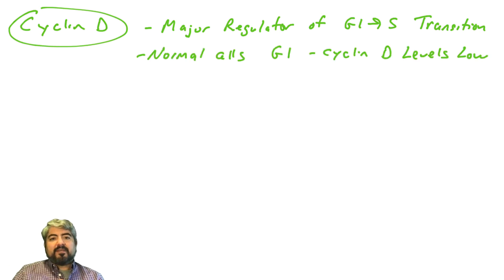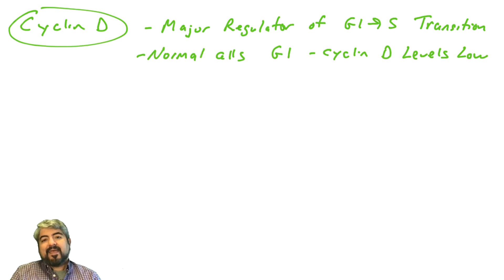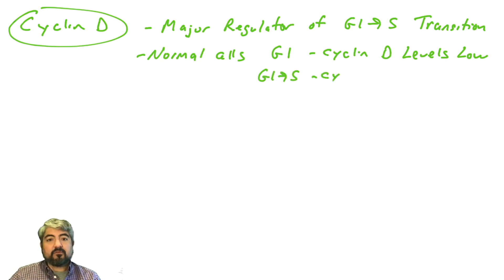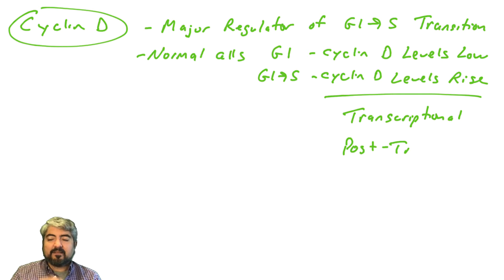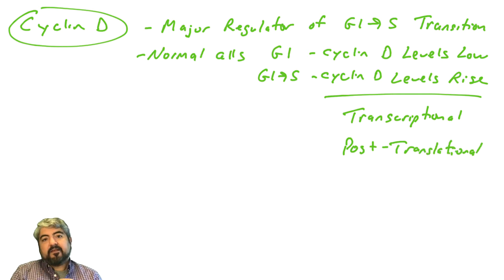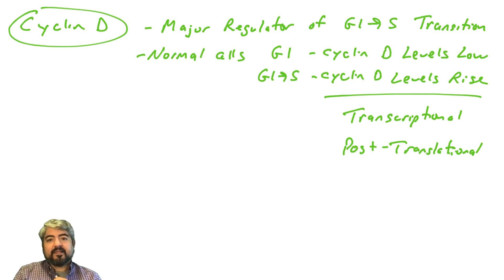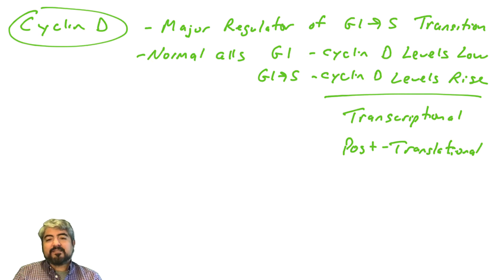In normal cells, cyclin D levels are kept very low. You need to keep this low because when cyclin D levels rise, that will push cells from G1 phase into S phase. Cyclin D levels can be regulated at many different places in the cell. We're going to focus in this video on the transcriptional regulation of cyclin D, and we'll talk in a later video about regulation at the post-translational level.